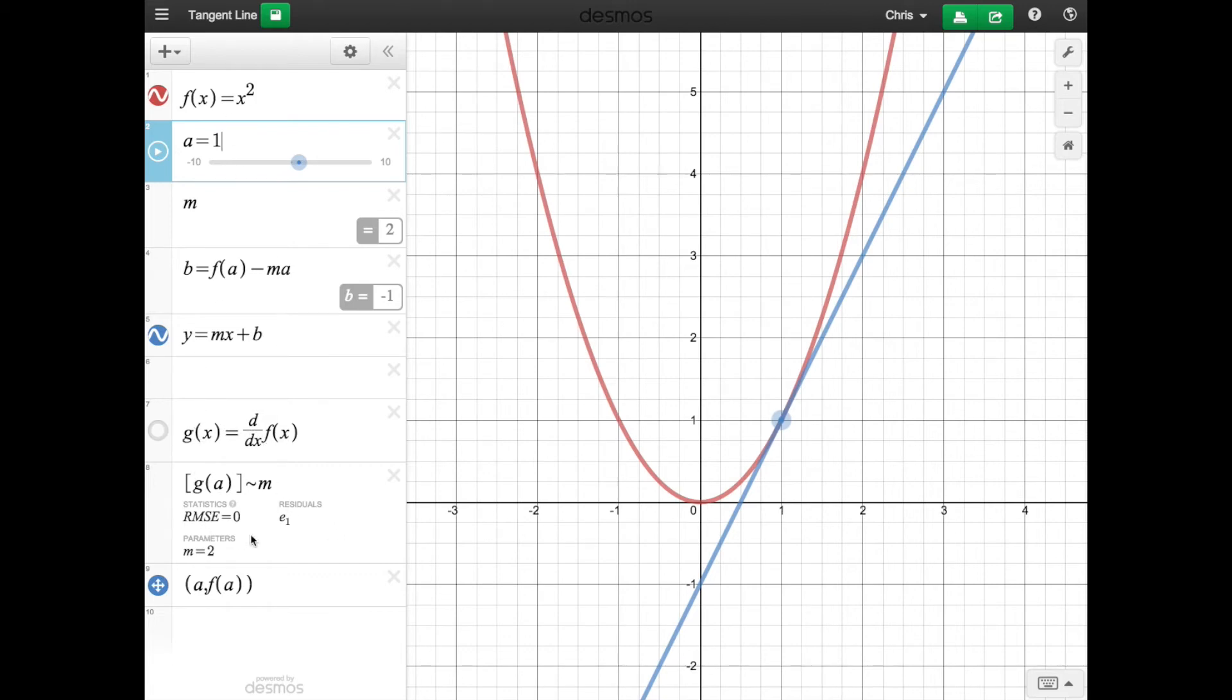And then this fancy thing right here is basically just saying g of a, this a right here, set that equal to or approximately equal to m. In this case, it would be exactly equal to m, and that's how you get your m of 2 right here.